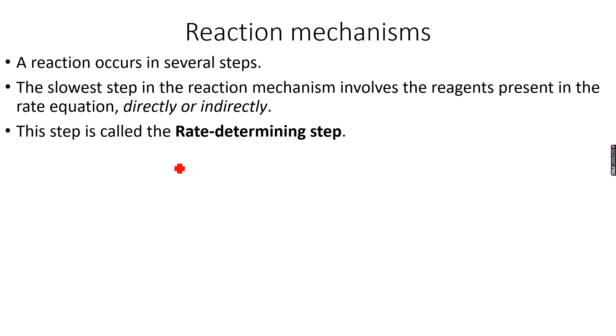This is very important. Now, we are studying this in rates because the different steps, they have different rates. So, the slowest step in the reaction is called the rate-determining step, RDS, the slowest step in the reaction.